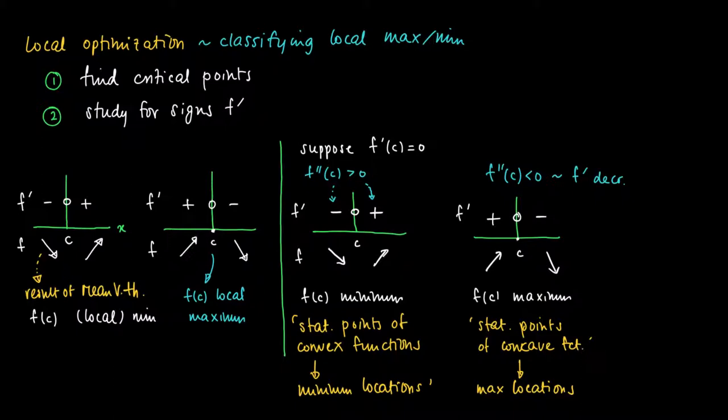To summarize: first we solve for critical points using the first order condition for optimization. Then with the second order condition, we check whether the stationary points are minimum or maximum values. It may also be the case that a stationary point is neither a maximum nor a minimum.